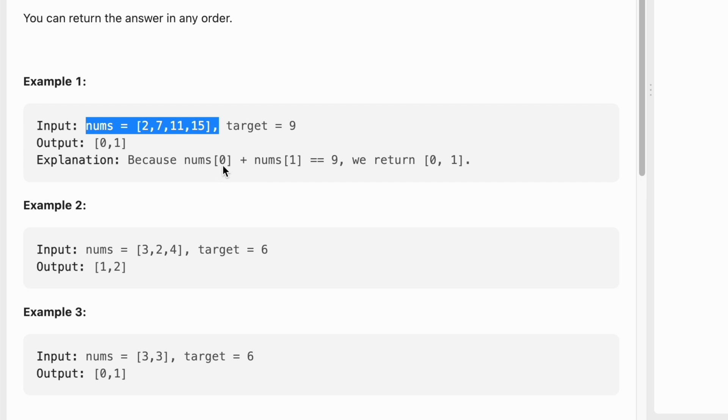...and our target is 9, we need to return 0 and 1 as the output because the number at index 0 is 2 and the number at index 1 is 7, and together they add up to our target value which is 9.